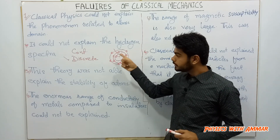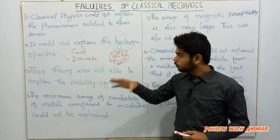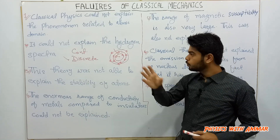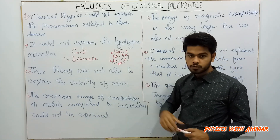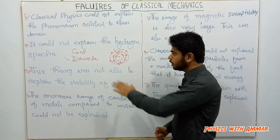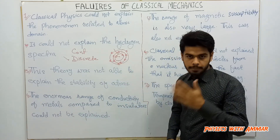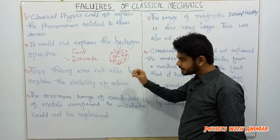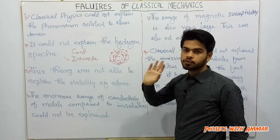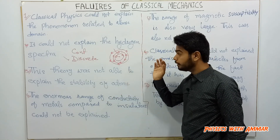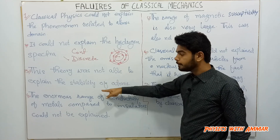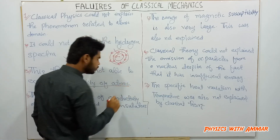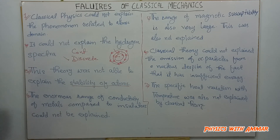This was a significant drawback of classical mechanics. You can search for the atomic model videos on Physics with Ammar to see how this problem was eventually resolved. Because classical mechanics could not explain the stability of atoms, this remained a big drawback of classical mechanics.